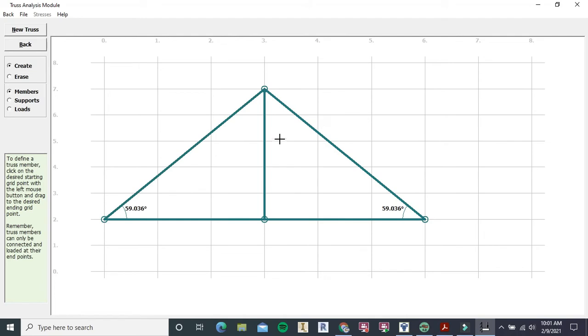Now the key is you can only connect members at the joint. For example, I couldn't try and connect this member here. You'll see that doesn't work because there is no joint to connect to. So if I did in fact want a member like so, then I would have to redraw this with a joint, say right there, to connect to.